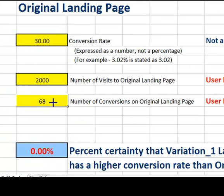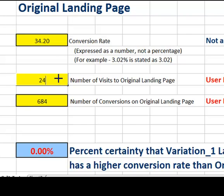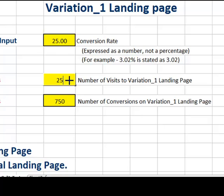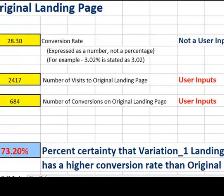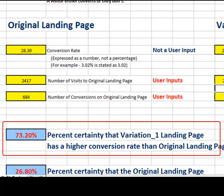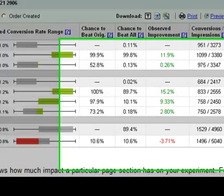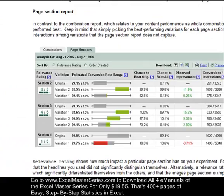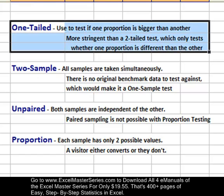Let's take a look at our Excel spreadsheet. We're going to plug the numbers in: 684 conversions from 2,417 clicks on the original landing page, and Variation 1 has 750 conversions from 2,578 clicks. We run our hypothesis test and it shows that there's a 73.2% chance that Variation 1 landing page converts better than the original. Looking at the Optimizer output to confirm — yes, it is: 73.2% chance that Variation 1 converts better than the original.